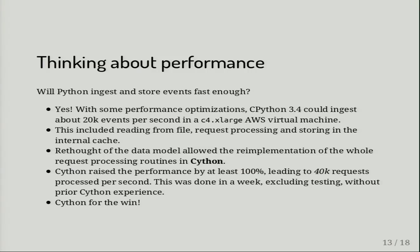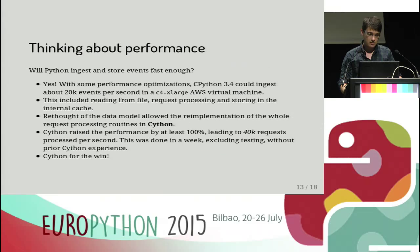Is Python fast enough to ingest this data? Yes — with some performance optimizations, CPython can get about 20,000 requests per second on the same machine, on a C4X-large Amazon Web Services virtual machine with four virtual cores and eight gigabytes of RAM. However, after we deployed it to production, we re-implemented the data processing system in Cython. That took about a week, excluding testing, without any prior Cython experience, and it doubled the performance. So Cython — way to go.